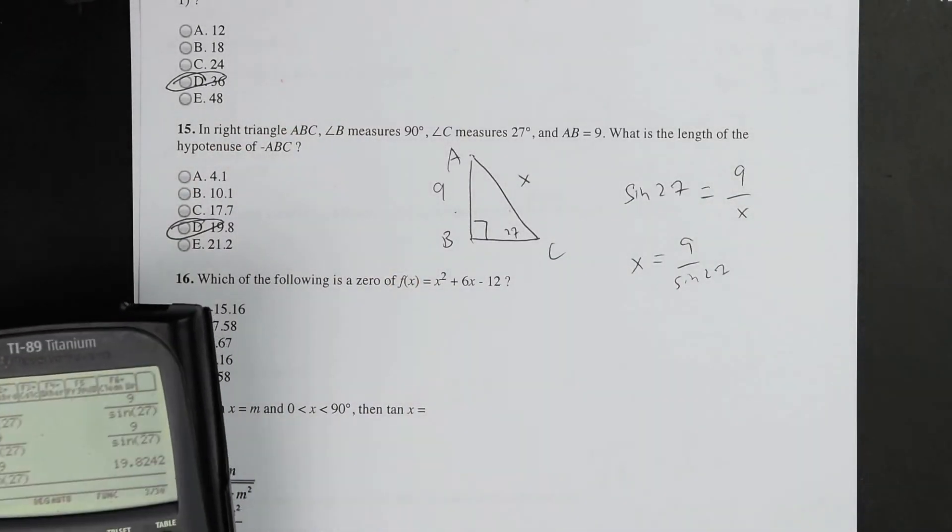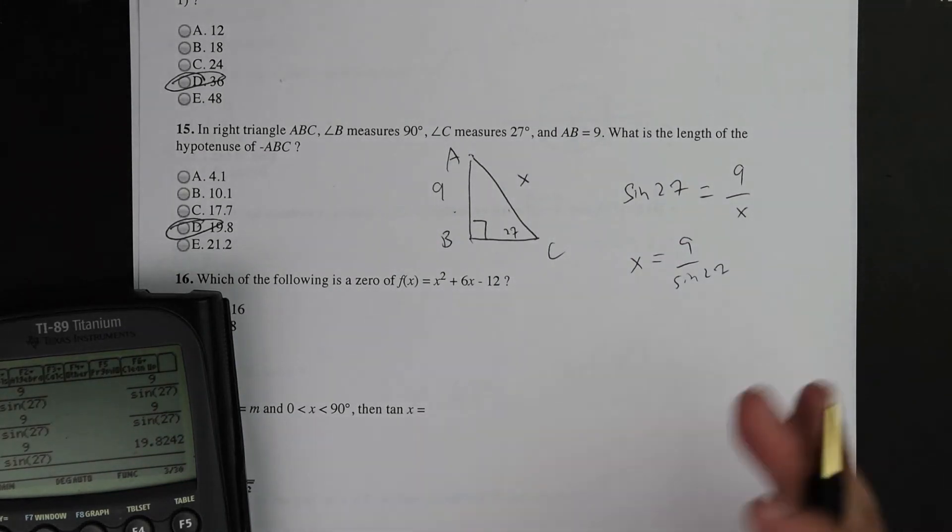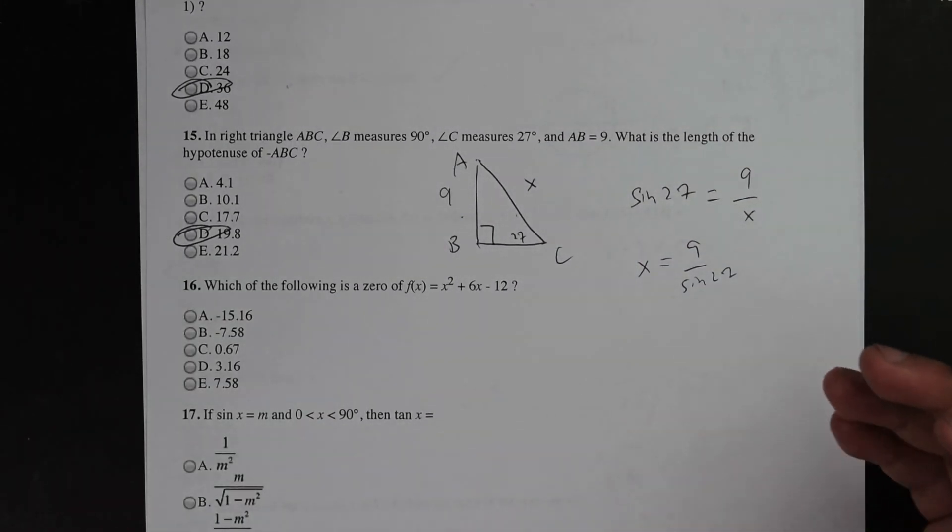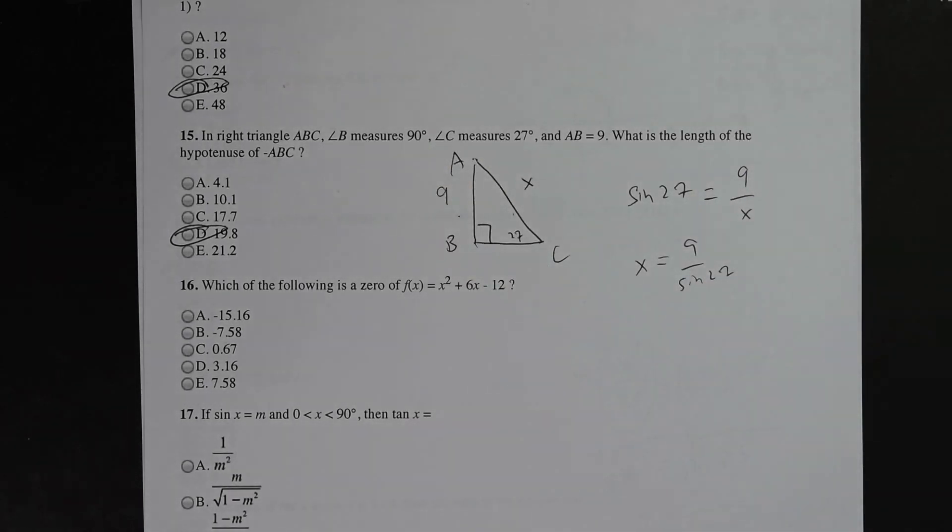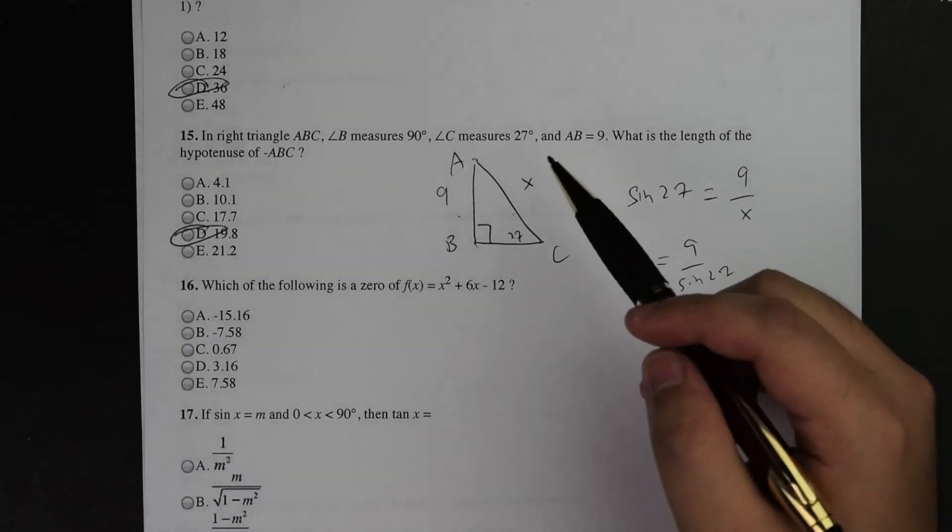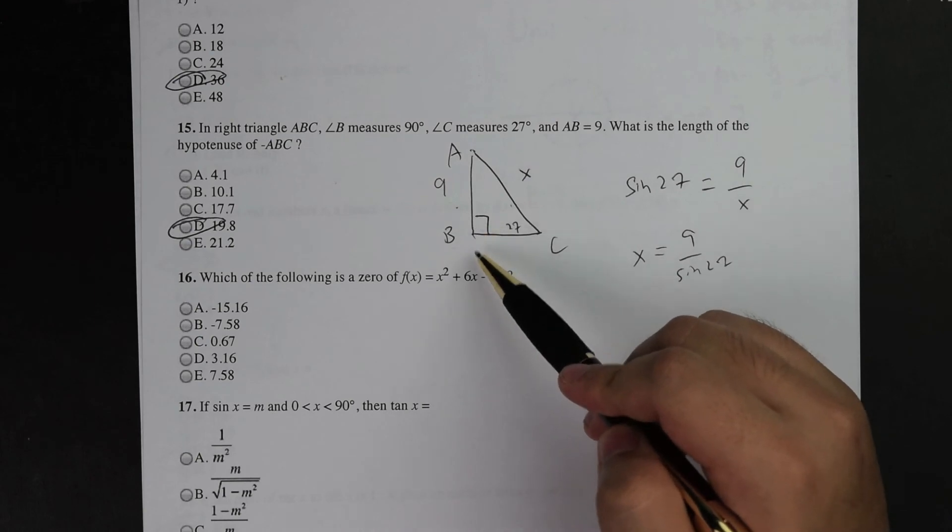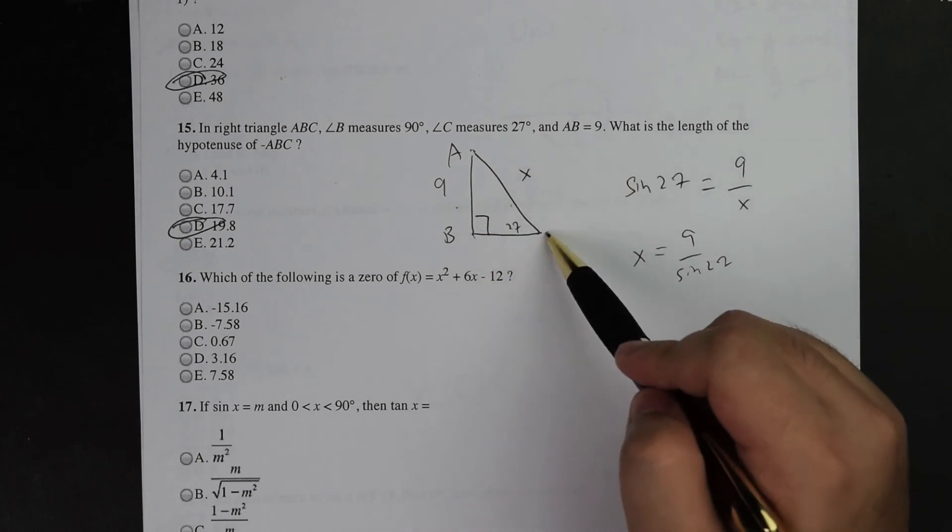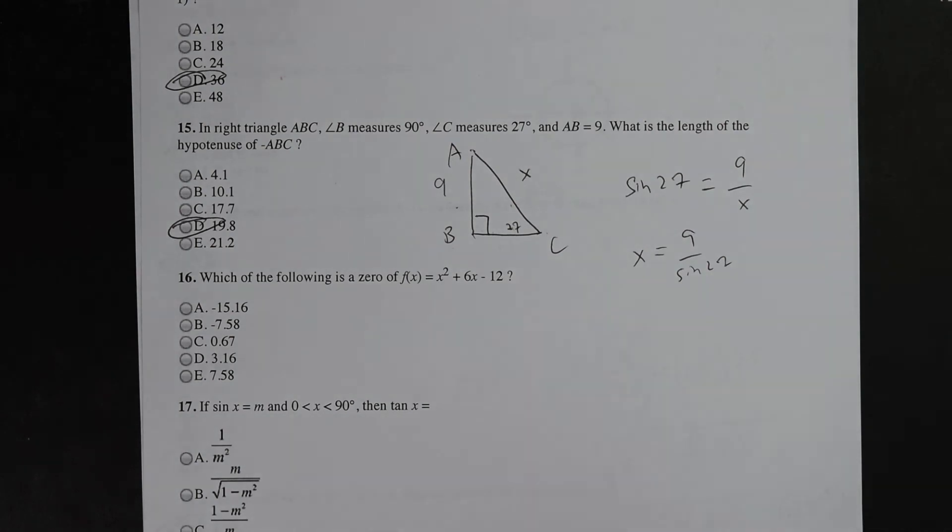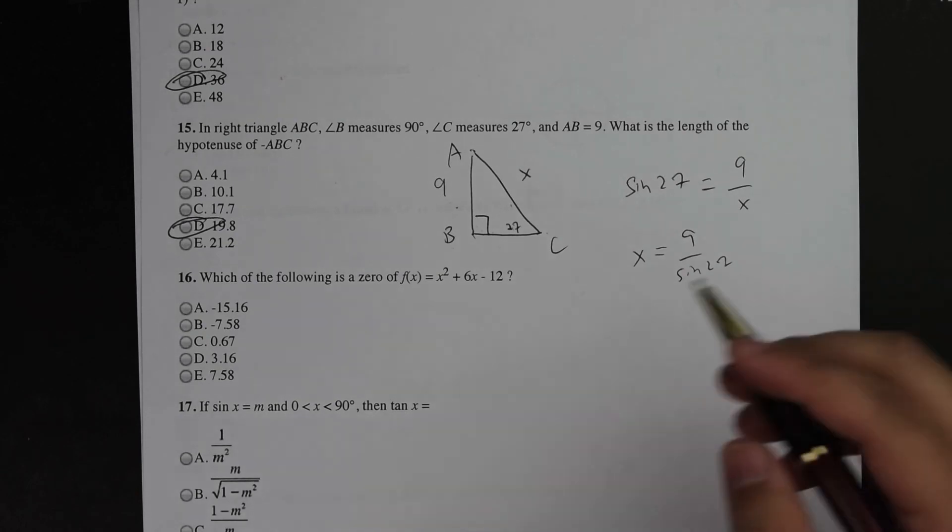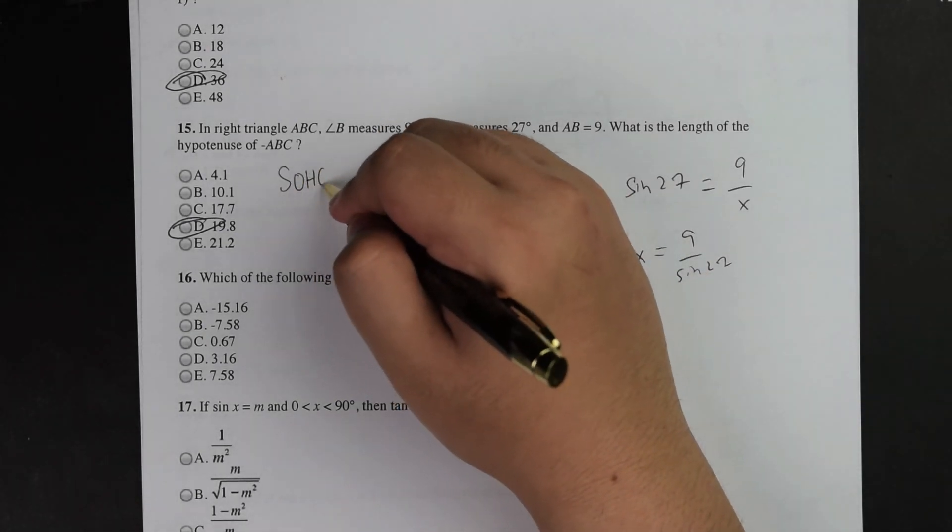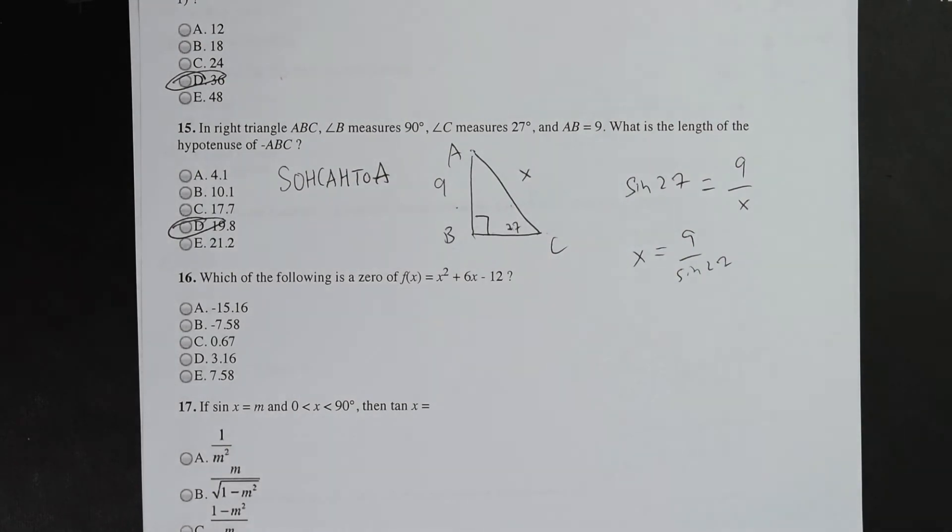So for number 15, my final answer is going to be D. And now I'm going to explain how I was able to get to this answer so quickly. They tell me the setup. And usually when you're doing these types of questions, you do want to create a quick sketch so that you can visualize what's going on without making any mistakes along the way. They told me that B is going to be 90 degrees, AB is going to be 9, and C is going to be 27 degrees.